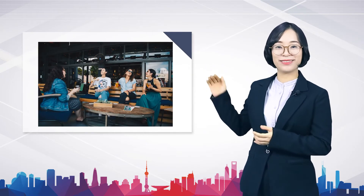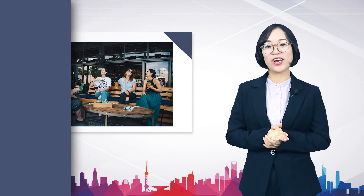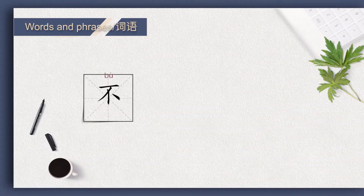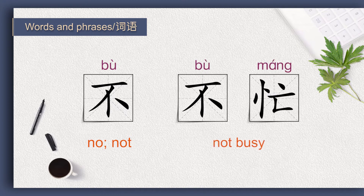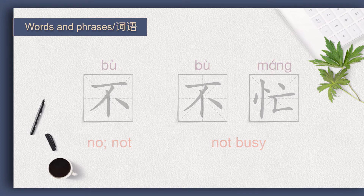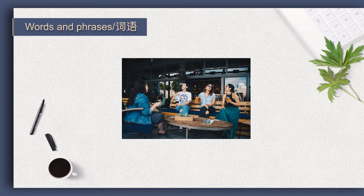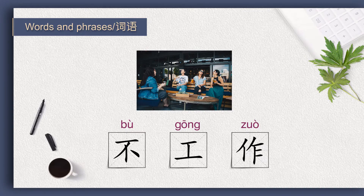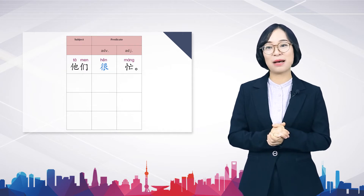Are they busy right now? No. No in Chinese is 不。 Not busy in Chinese is 不忙。 They are not busy because today is Sunday, so they don't have to work. In Chinese, don't work is 不工作。